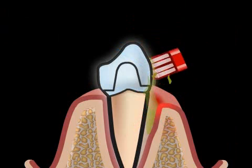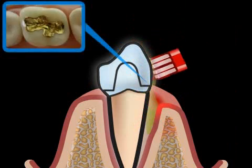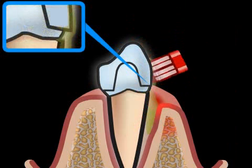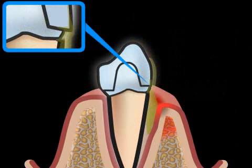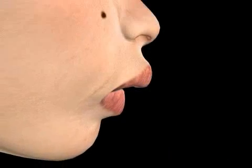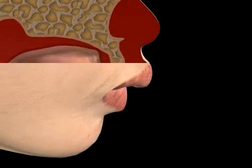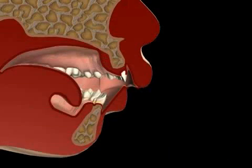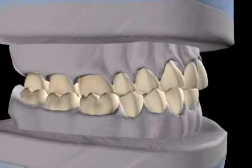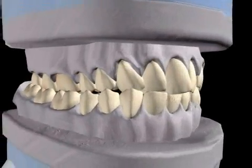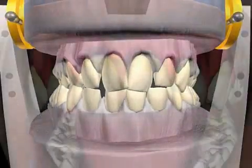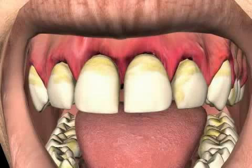In cases of protruding crown margins, protruding fillings, and malocclusions, thorough plaque removal isn't possible. Even when employing an optimal cleaning technique, you won't be able to remove all the plaque and periodontitis will develop.